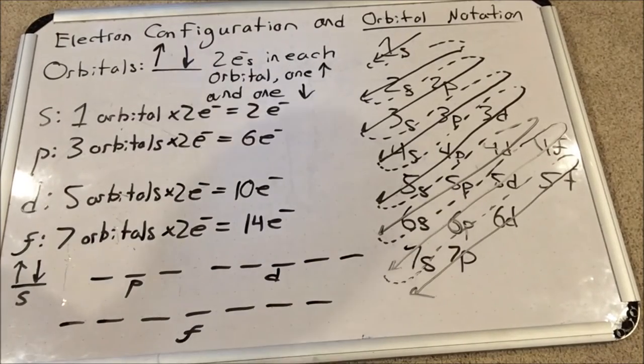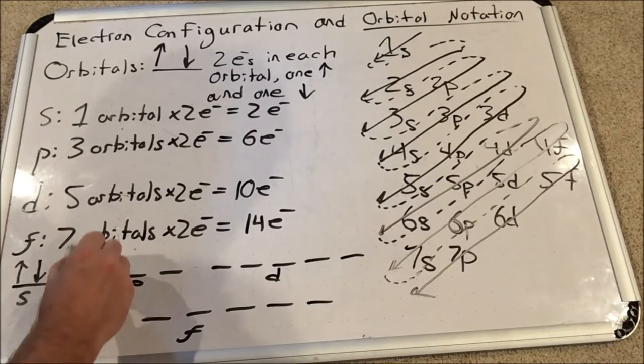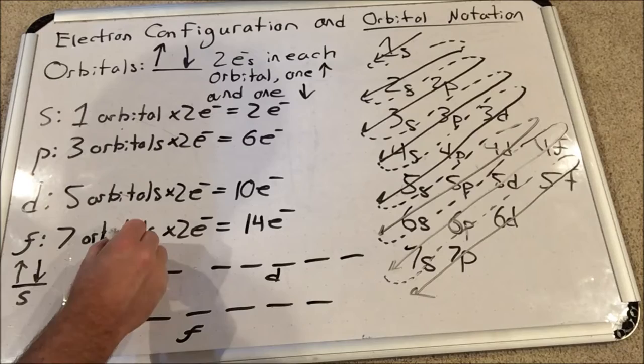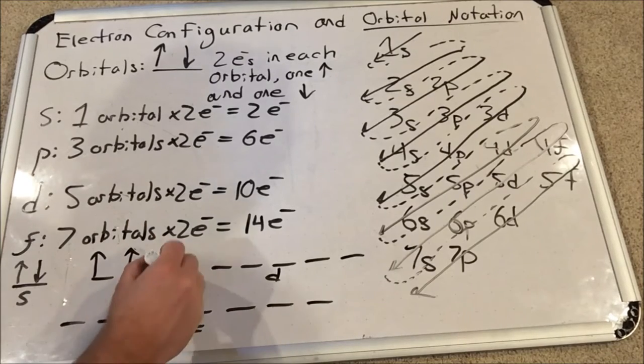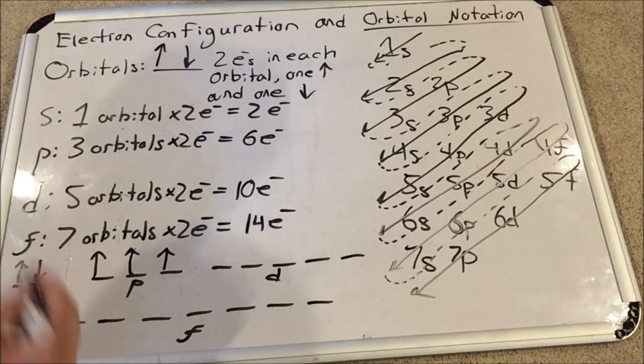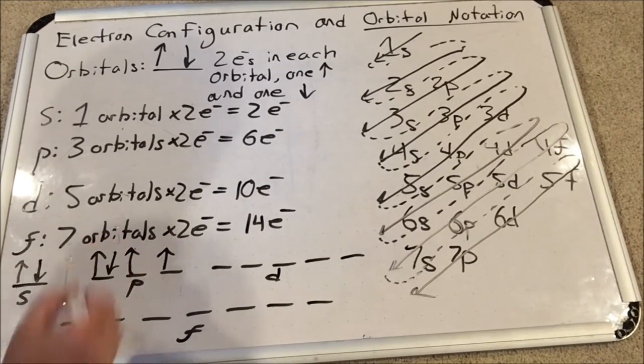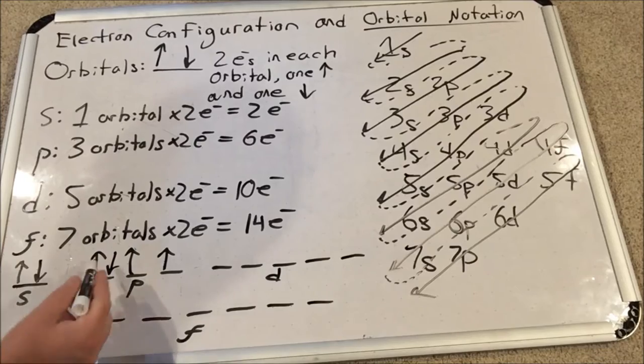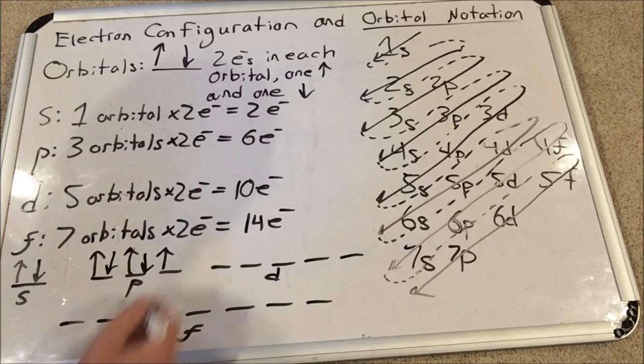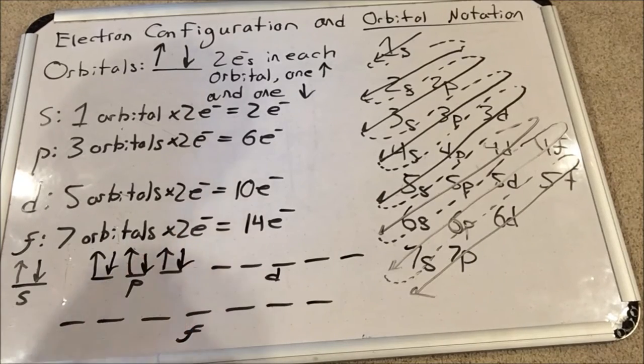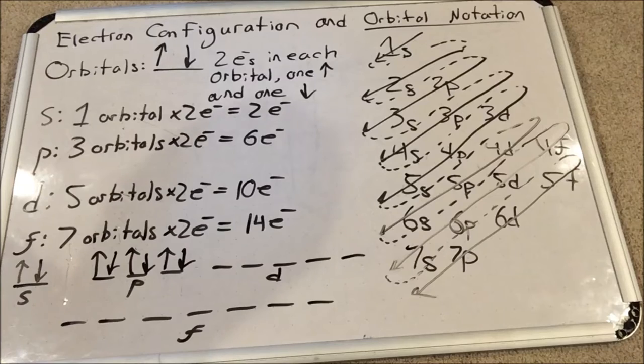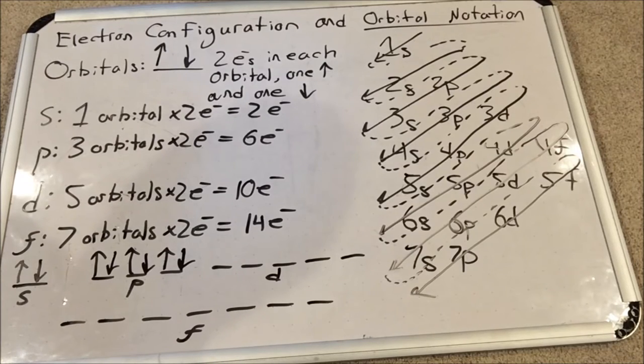Here's how the p sublevel must be filled: first an up arrow, then not a down arrow, we go to the next spin up arrow, the next spin up arrow. If we have four, we go back to the first orbital and fill our first spin down electron. If we have five, we fill our next spin down electron. If we have all six, we fill our last spin down electron spot in the third orbital. That filling order must be preserved.